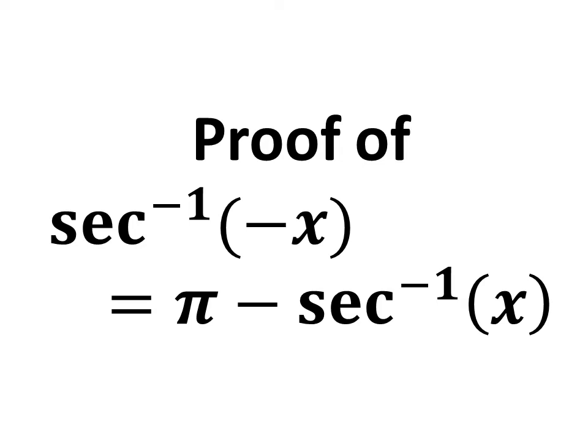In this video, we will learn how to prove the trigonometry identity: inverse secant of minus x is equal to π minus inverse secant of x.